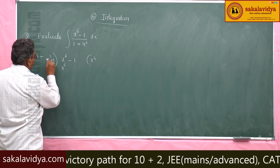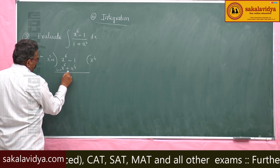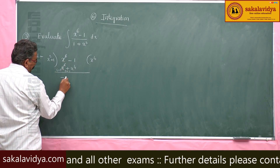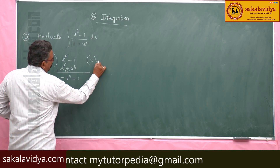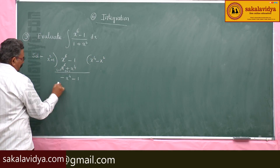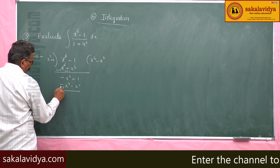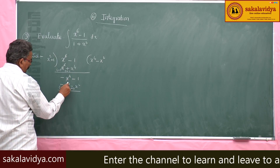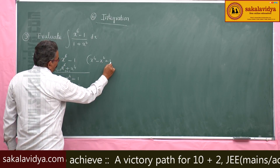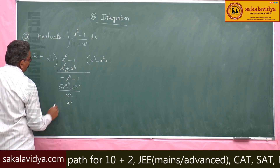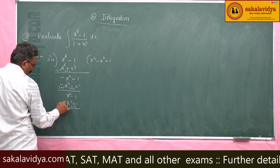So this is x⁶ + x⁴; subtract — this becomes minus. These two cancel, giving minus x⁴ - 1. Now, minus x⁴ divided by x² gives minus x². So minus x⁴ and minus x²: change the sign — plus, plus — these two cancel, leaving x² - 1. Now x² divided by x² + 1.